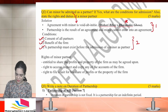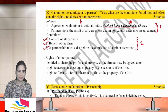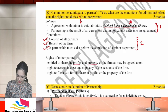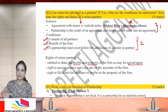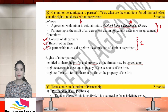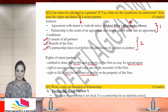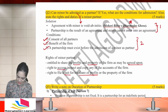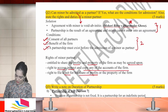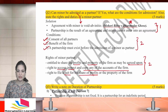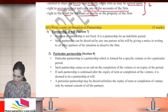Now, rights of a minor partner: he is entitled to a share in the profits and property as may be agreed upon. If the minor is not given his share of profit, he can file a suit — but only when he decides to leave and severs from the firm. He also has the right to access, inspect, and take copies of the books of accounts. However, this right does not extend to other books. If you have written all this properly, give yourself two marks.